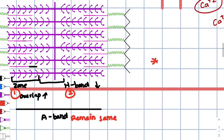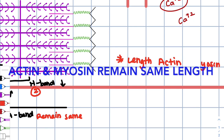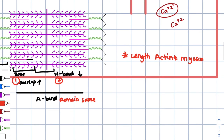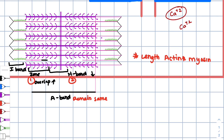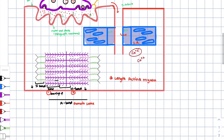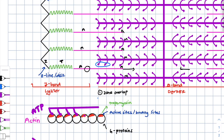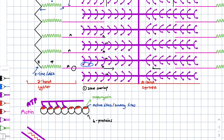What also remains constant is the length of the actin and myosin — they remain the same. It's the distance that changes — the distance only becomes shorter, but the lengths of actin and myosin remain the same. I hope this video cleared some things up for you, and I wish you the best of luck on your examination. Don't forget to like and subscribe and leave a comment below for future videos.